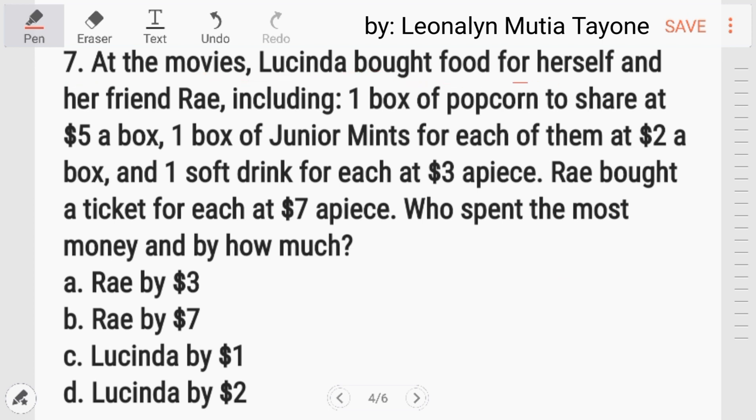Number 7: At the movies, Lucinda bought food for herself and her friend Rai, including one box of popcorn to share at five bucks, one box of junior mint for each of them at two dollars a box, and one soft drink for each at three apiece. Rai bought a ticket for each at seven dollar apiece. Who spent the most money and by how much? Unahin natin si Lucinda. Itong si Lucinda, one box daw ay five plus junior mint for each of them at two. So, two times two kasi dalawa sila. And then, soft drinks for each at three plus three times two kasi each man. Dalawa sila. Si Lucinda, five plus four plus six equals fifteen ang nagastos niya.